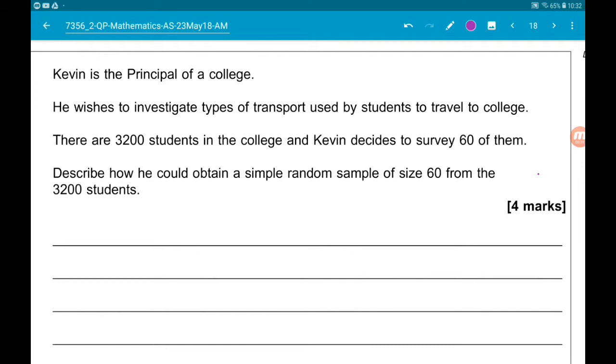Next, I would set up a random number generator to generate numbers between 1 and 3,200. I would then start generating these numbers between 1 and 3,200.